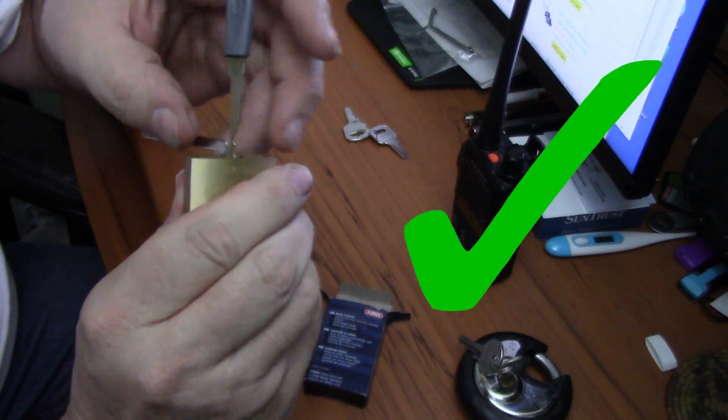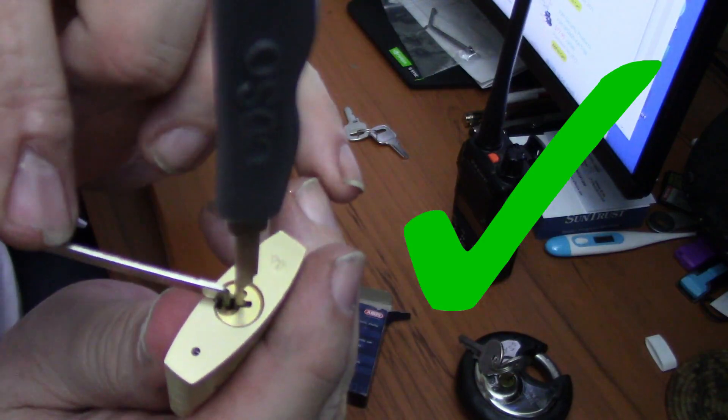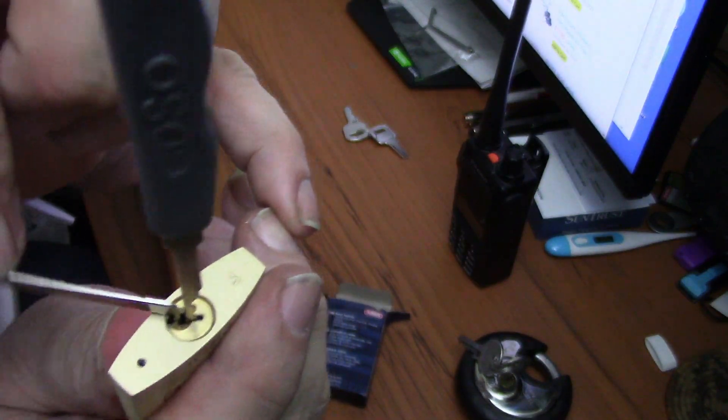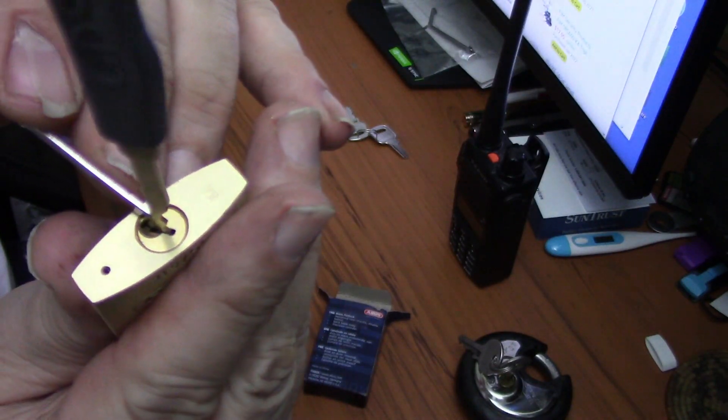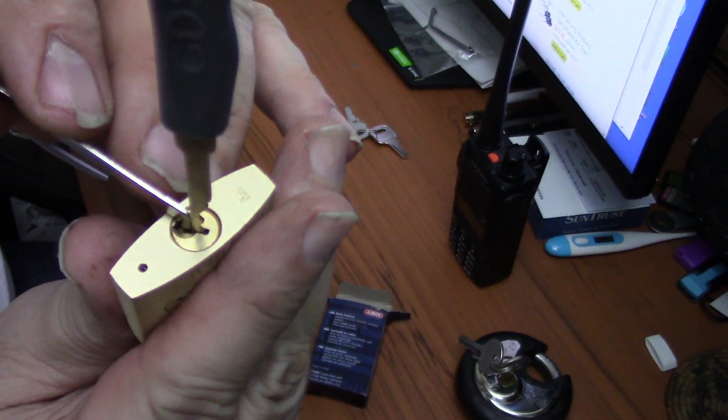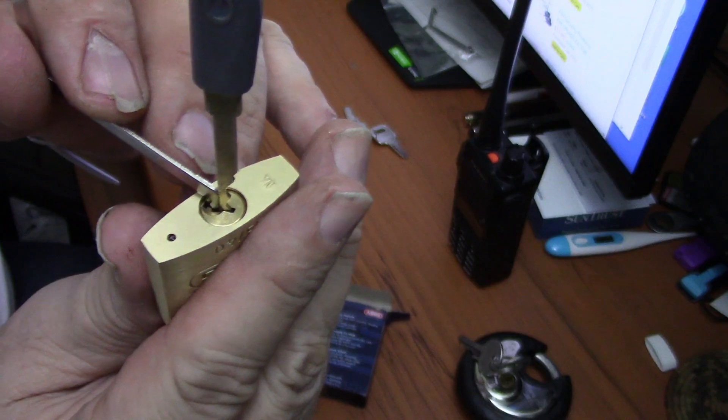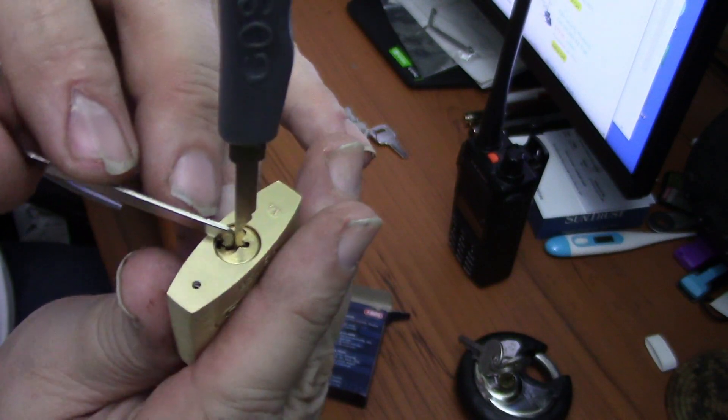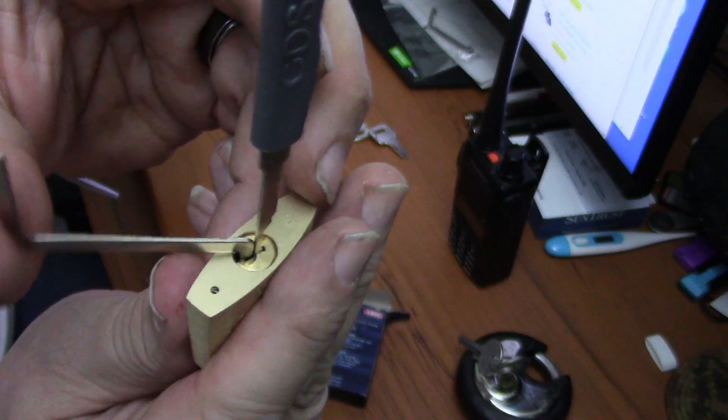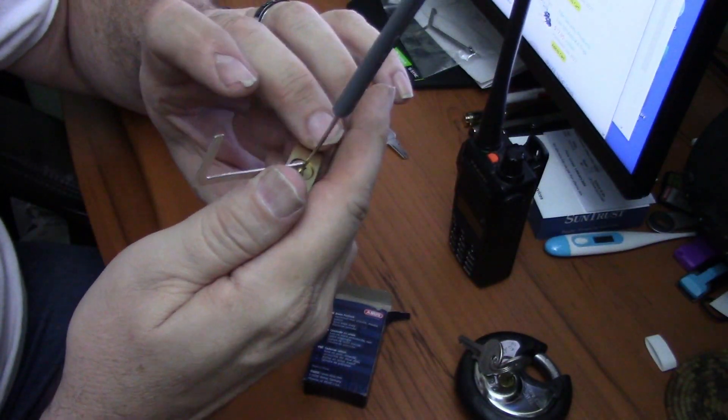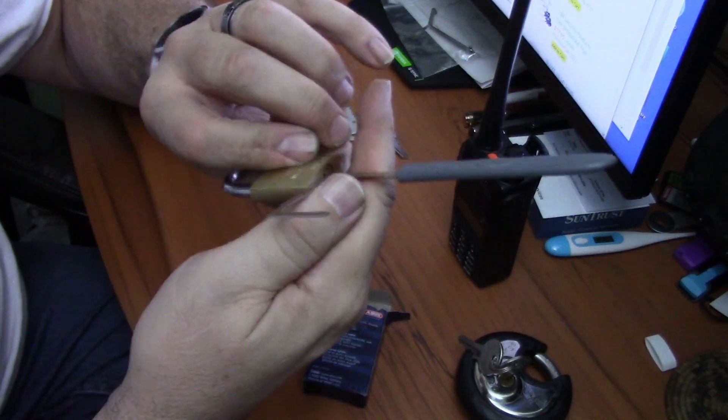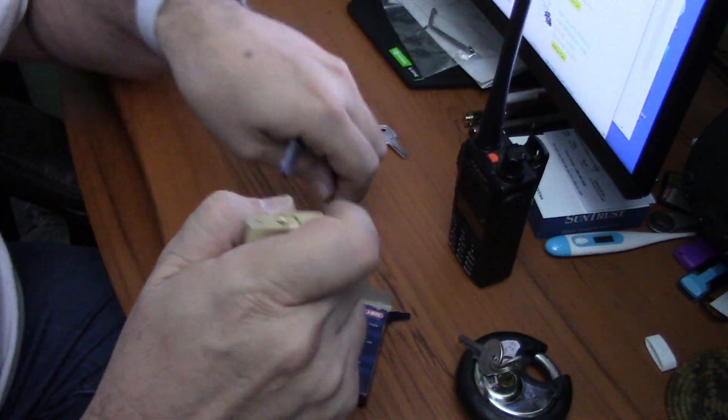Well, that proved to be a pretty easy pick. I'm a little surprised. I expected more. Abus locks are usually pretty difficult locks, so they take a little longer. But that was just... Let's just try that again. That was just too... It just can't be that easy.